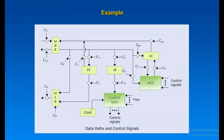This example shows a simple processor with a single accumulator AC. The data paths between elements are indicated. The control signals emanating from the control unit are labeled as C with a numbered subscript and indicated by a circle. The control unit receives input from the clock, the instruction register, and flags. With each clock cycle, the control unit reads all of its inputs and emits a set of control signals. Control signals go to three separate destinations: data paths, ALU, and system bus. The control unit controls the internal flow of data; for each path to be controlled, there is a switch indicated by a circle in the figure.